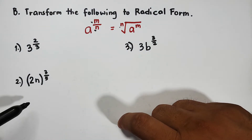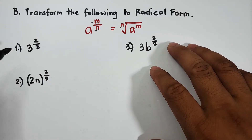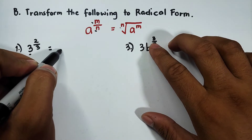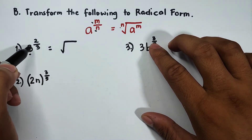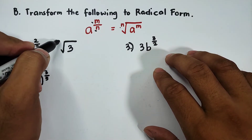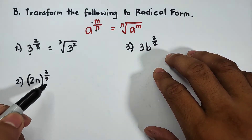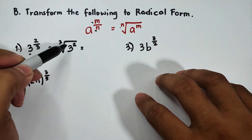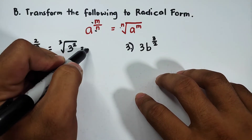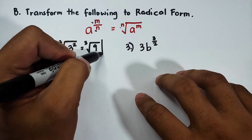We have three examples and I will show you how to transform these expressions with rational exponents into radical form. For the first example, your base will serve as the radicand. First, draw the radical sign, copy your base inside, then the denominator 3 will become the index, and the numerator 2 will serve as the exponent of your radicand. We can simplify: 3 squared equals 9, so the final answer for number one is the cube root of 9.